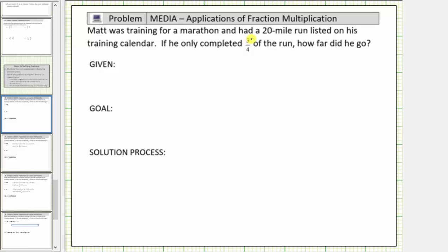Matt was training for a marathon and had a 20-mile run listed on his training calendar. If he only completed three-fourths of the run, how far did he go?